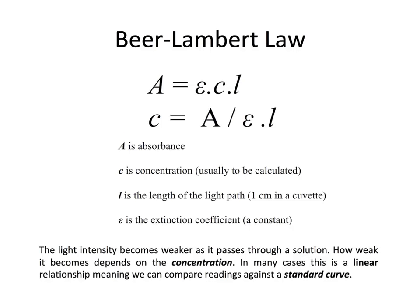Spectrophotometry works as a means to measure concentrations because of an association between light absorbance and concentration. According to the Beer-Lambert law, absorbance A is equal to the concentration times the path length of the light times a constant known as the extinction coefficient. The light intensity becomes weaker as it passes through a solution, and how weak it becomes depends on the concentration of that solution.